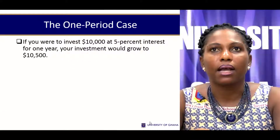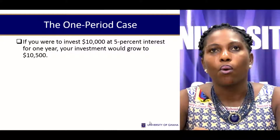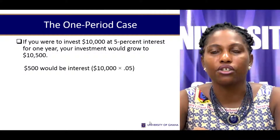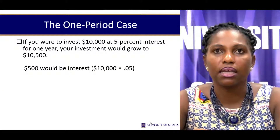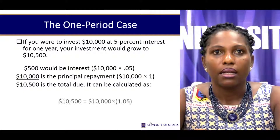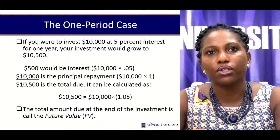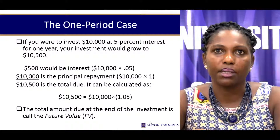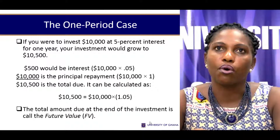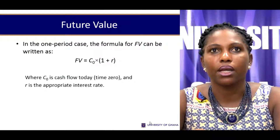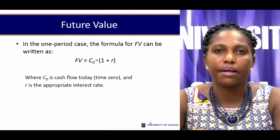Now let's look at a case where if we invest $10,000 at 5% for one year, what will our investment value be? We would earn interest of $500 to be added to our principal of $10,000 to give us $10,500. You're looking at this from the angle of the future value — the resulting future amount — computed as the principal multiplied by (1 + R). In the one-period case: Future Value = Current Payment × (1 + R), where the current payment is today's cash flow and R is the appropriate interest rate.